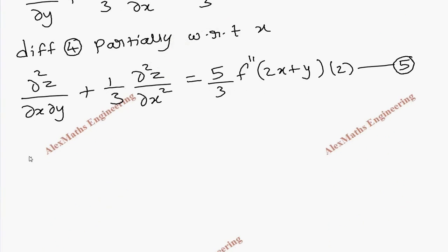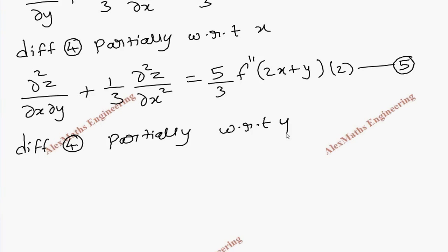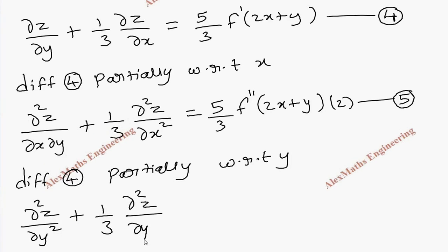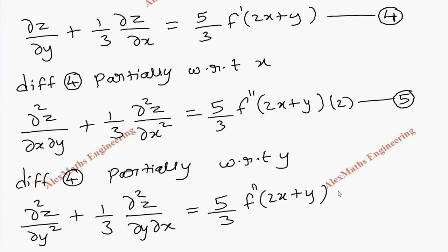Again we take the fourth expression and differentiate it partially with respect to y. This expression becomes ∂²z/∂y² plus 1 by 3 · ∂²z/∂y∂x equal to 5 by 3 · f″(2x + y) · 1. This is our sixth expression.